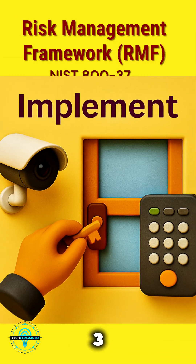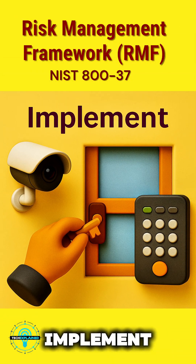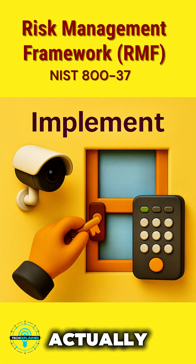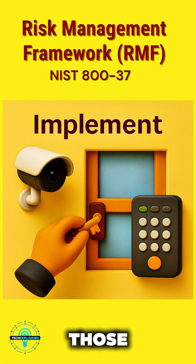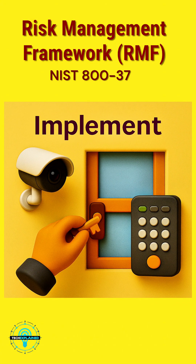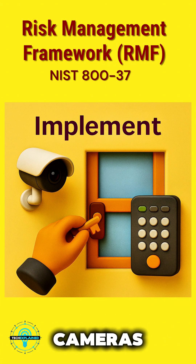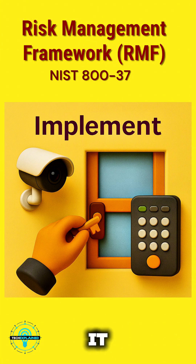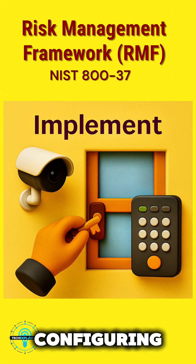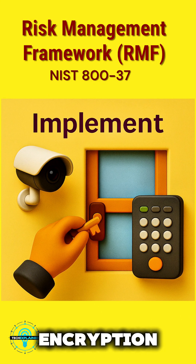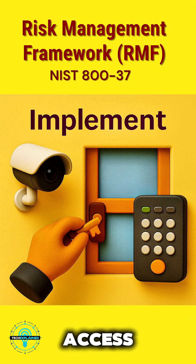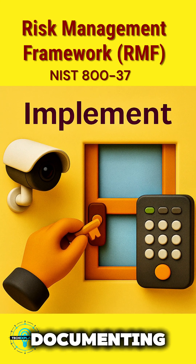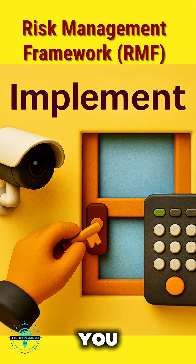Step three: Implement. Now actually install those protections. Put in the cameras, program the alarm, lock the windows. In IT, you're configuring firewalls, encryption, access controls, and documenting everything you did.